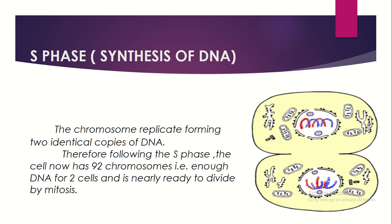After G1 comes the S phase, where chromosomes replicate, forming two identical copies of DNA. Following the S phase, the cell now has 92 chromosomes — that is, 46 plus 46 — enough DNA for the cell and it is nearly ready to divide by mitosis. DNA synthesis takes place during this S phase.